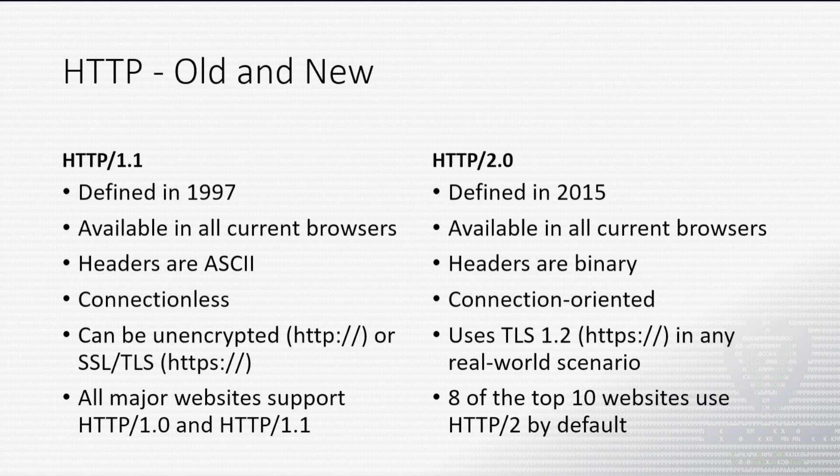With 1.1, it's really a connectionless technology. Your client, your web browser, asks for one file at a time and gets it back from the web server one file at a time. Where with 2.0, it is connection-oriented. We'll see the term stream pop up a few times, where basically a web server can send a bunch of files at once with a single TCP handshake and a single tear down at the end.